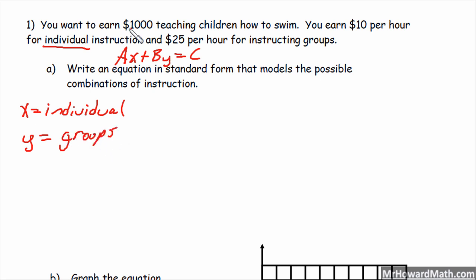So the total in the problem is $1,000. So our C value there will be $1,000. So we'll write the equation: $10 times individual lessons, so 10X, plus 25 times the groups that you instruct, so 25Y should equal $1,000. So that would be part A: 10X plus 25Y equals $1,000, where X was individual and Y are the group lessons that you teach.